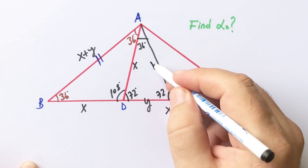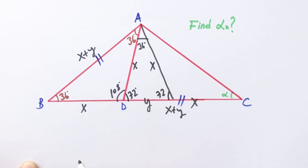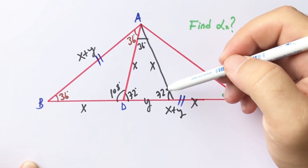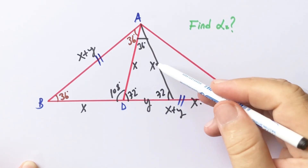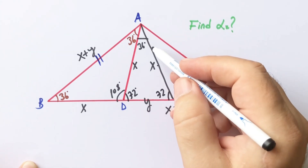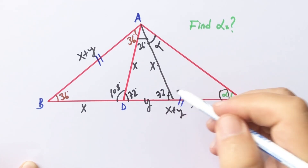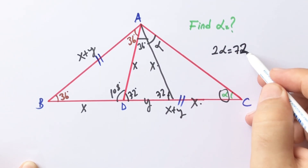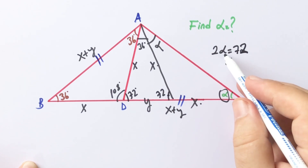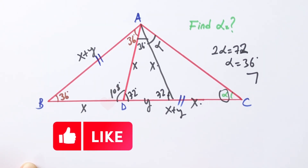This side is equal to x because the base angles are equal. We get yet another isosceles triangle since these two sides are equal. If this angle is alpha, then this angle is also alpha. We know two interior angles equal one exterior angle, so two alpha equals 72 degrees, meaning alpha equals 36 degrees.